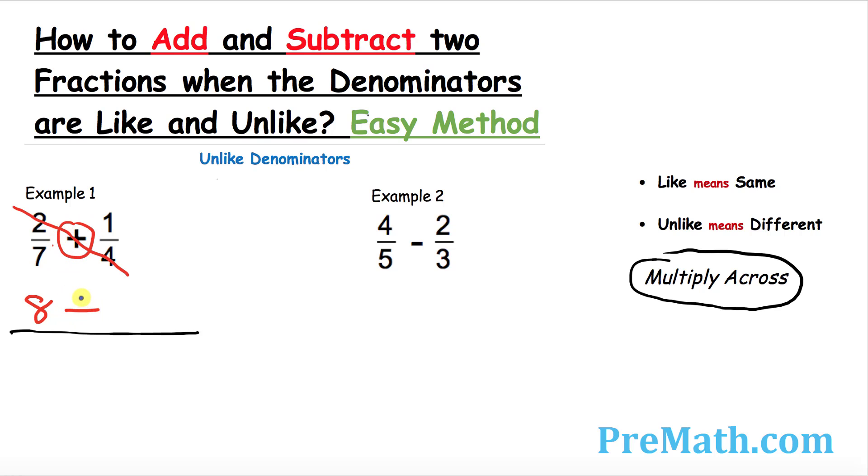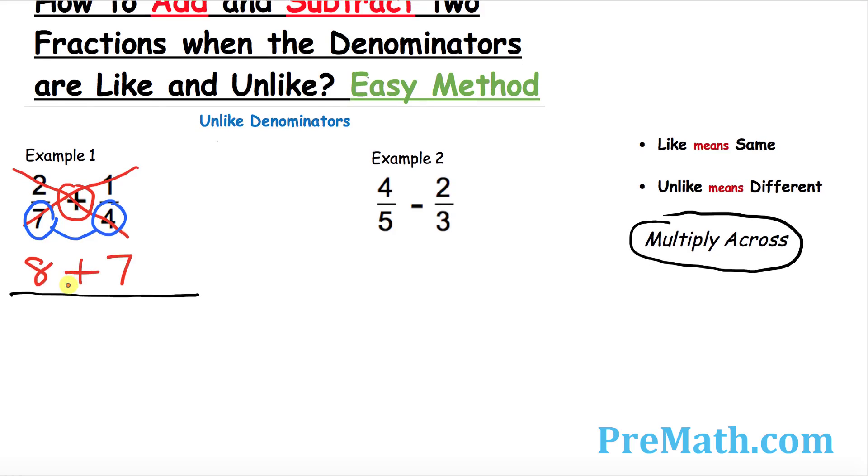And then there's a plus sign in between, so just go ahead and put down a plus sign. Now I want you to multiply across from the other side: 1 times 7 is 7. So then we're going to focus on the bottom numbers which are 7 and 4.